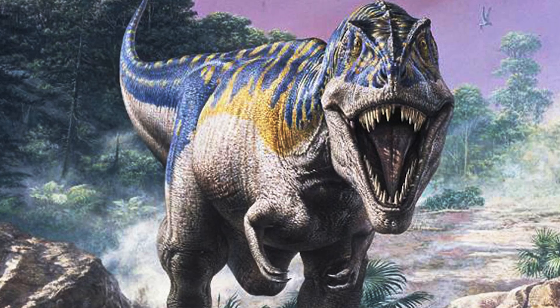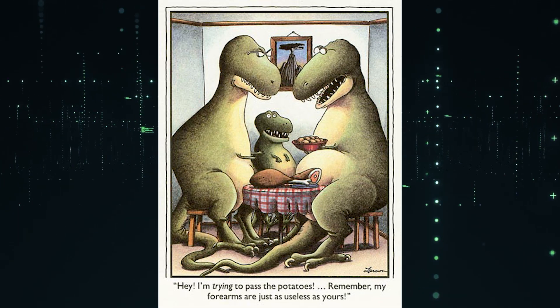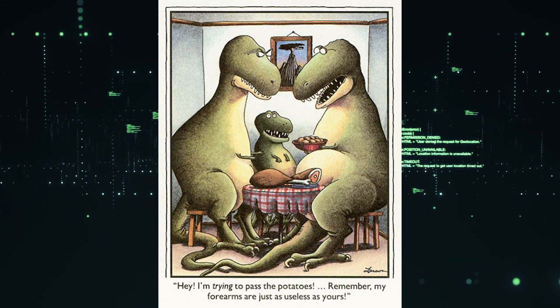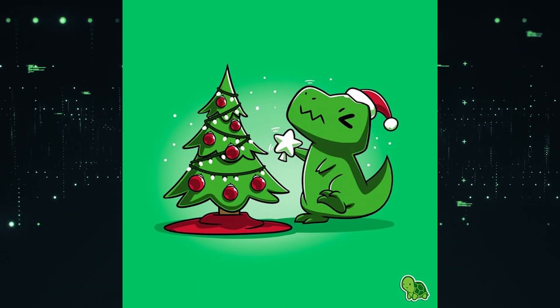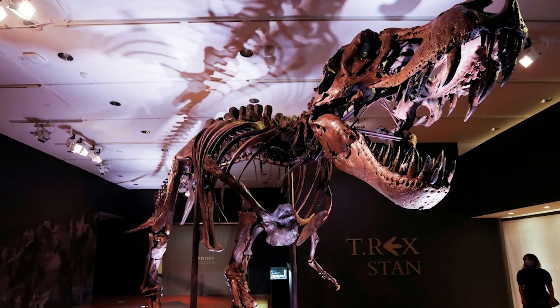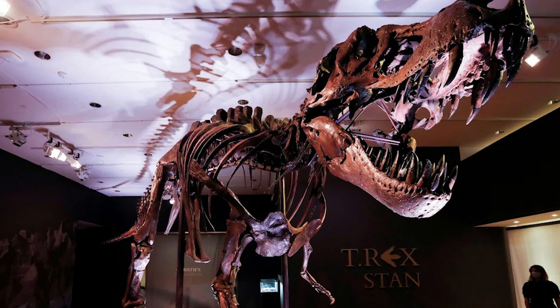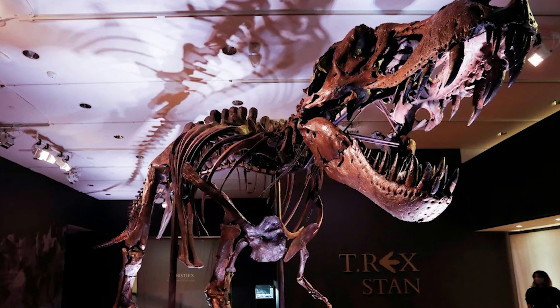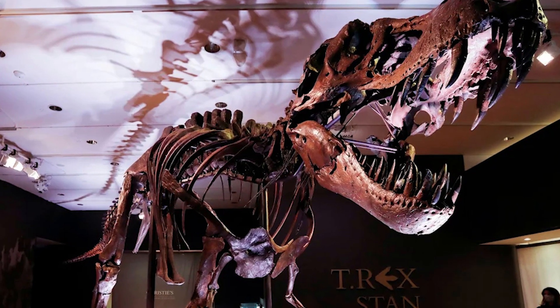You've seen the endless memes and comics of Tyrannosaurus Rex with useless small arms — from not being able to pass the potatoes in Gary Larson cartoons to having difficulty placing the star on top of a Christmas tree. It's funny to think about for sure, but what is the scientific reason behind those small arms, and what possible use could they have had? That's what we will be exploring today.